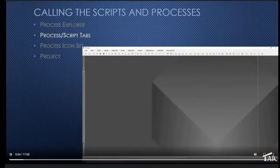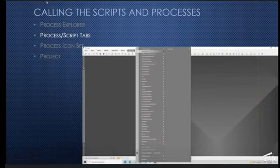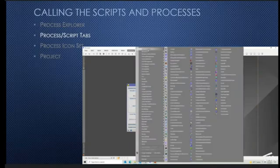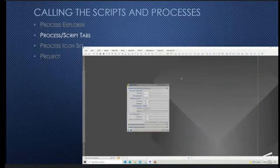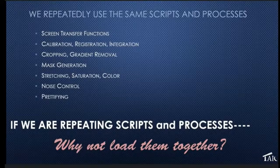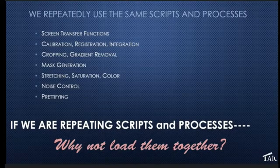Here's another way to call the same process. If you know where it is on the menu, you can pull down on the process menu and go straight to it. If you don't know just where it is, you can pull down all processes, look it up in the list, and click on it. But if we're repeating our scripts and processes with the same default parameters, why not just load them all together with the processes and parameters that we actually use?